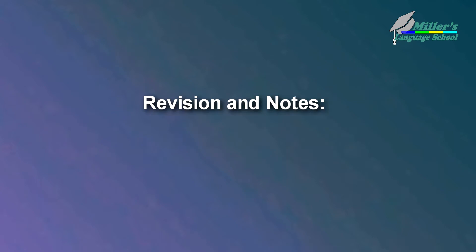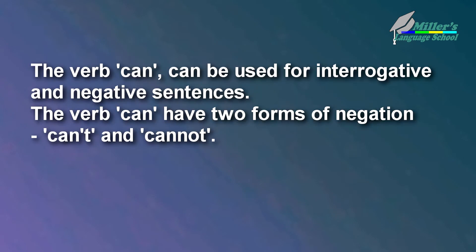Revision and notes. The verb can can be used for interrogative and negative sentences. The verb can has two forms of negation: can't and cannot.